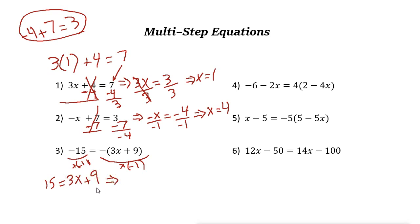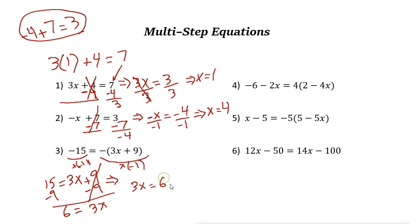The next step: 3x is added to 9, so we need to use the inverse of addition, which is subtraction. Subtract 9 from both sides to get rid of the 9. This side becomes 3x, and the other side 15 minus 9 is just 6. Now 3x equals 6. The inverse operation of multiplication is division — divide both sides by 3. 3x divided by 3 is just x, and 6 divided by 3 is 2.